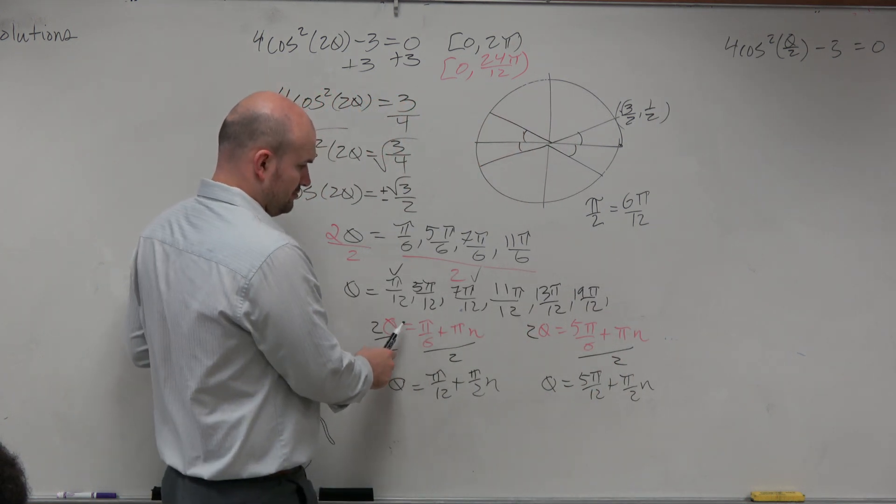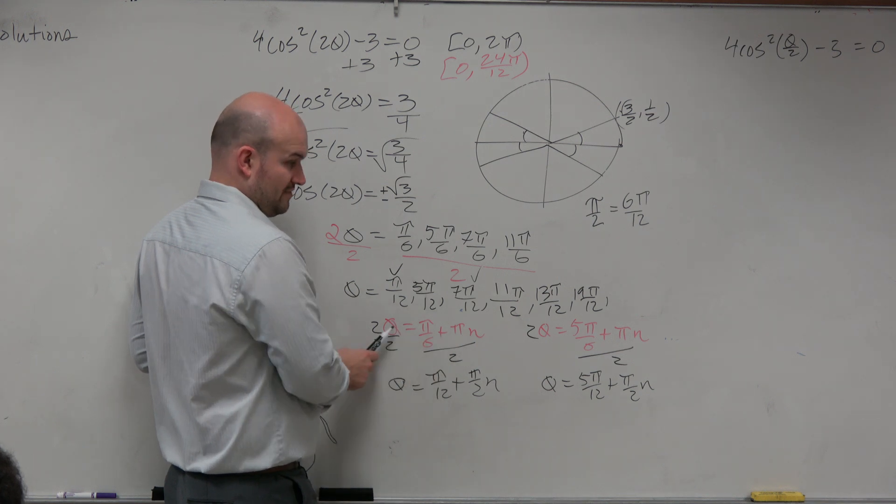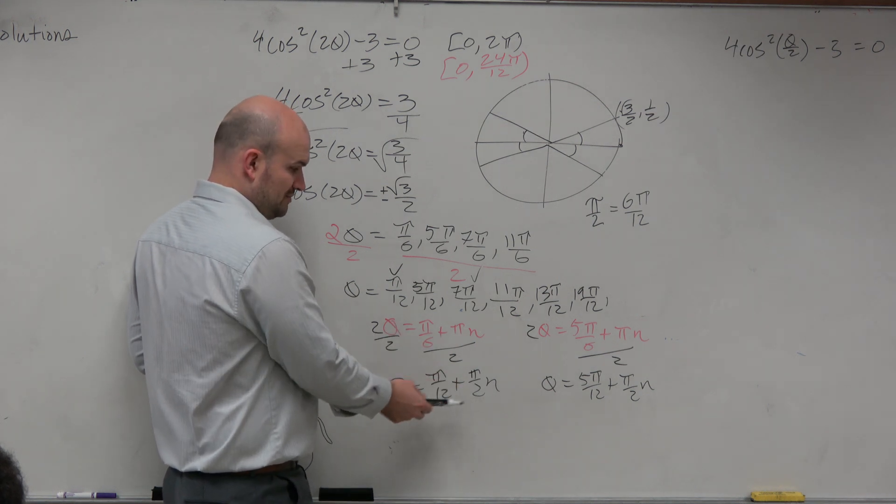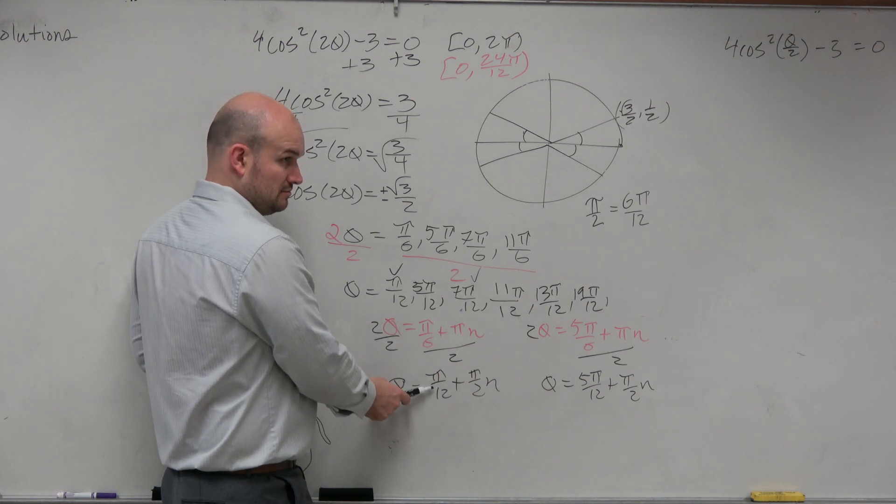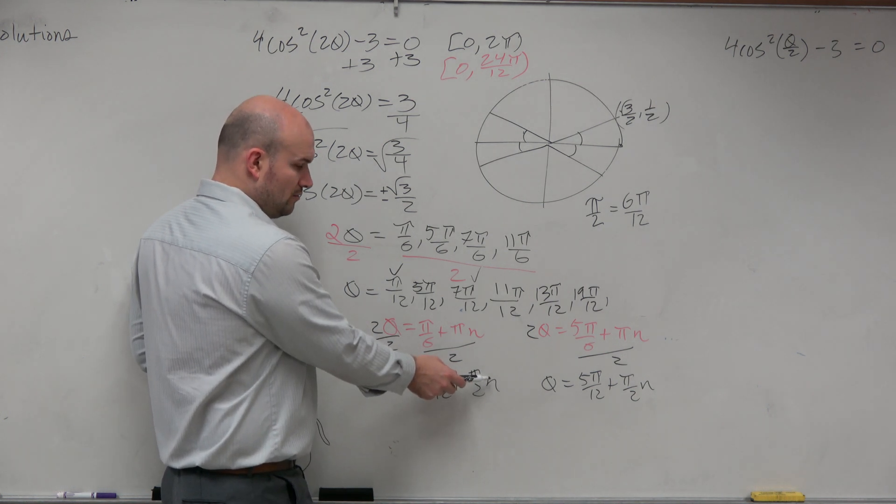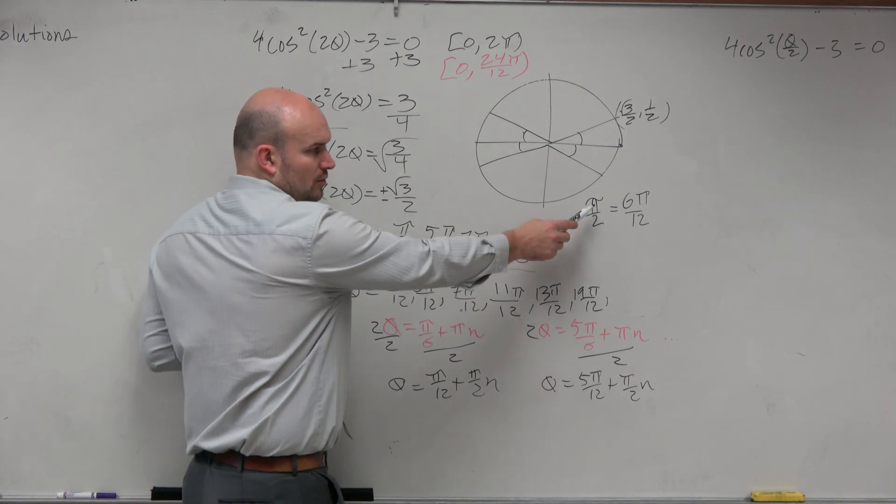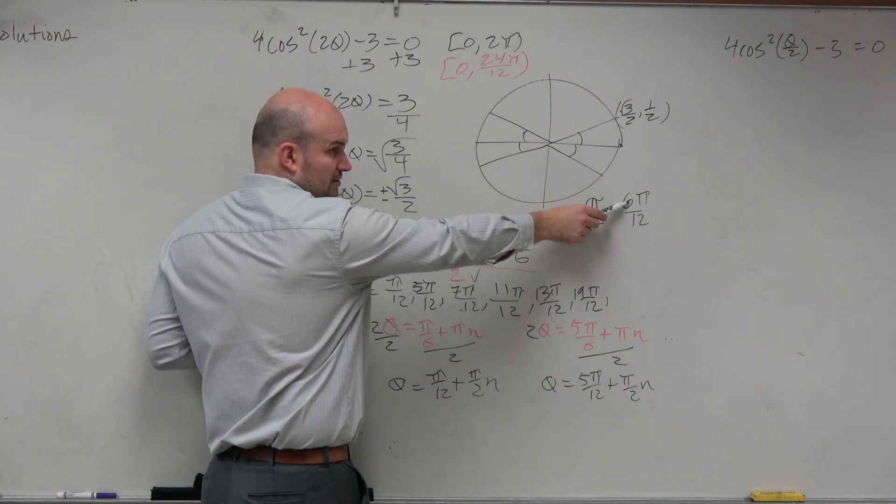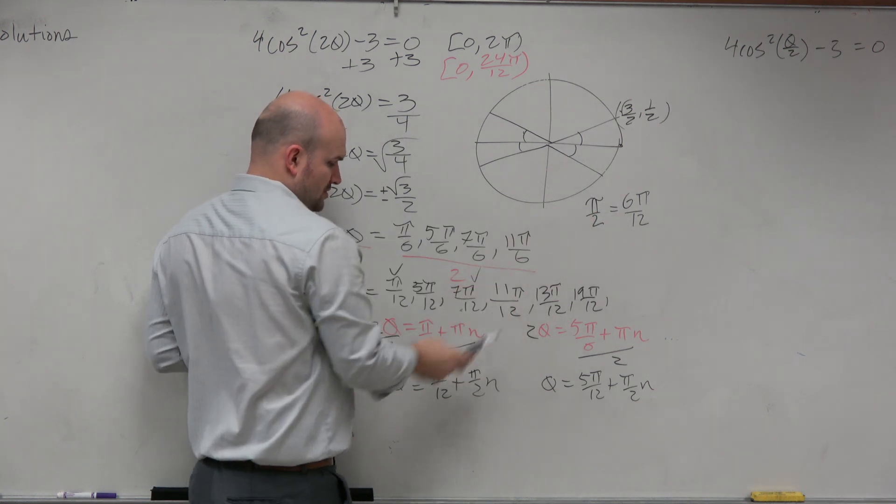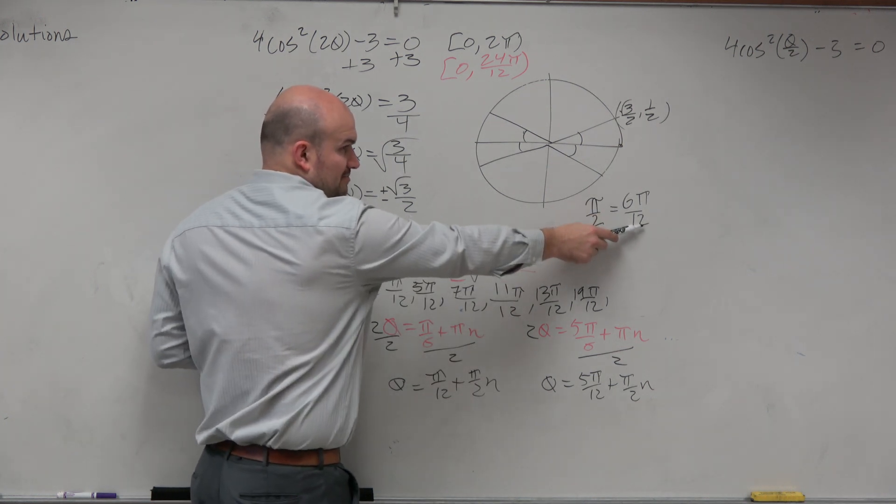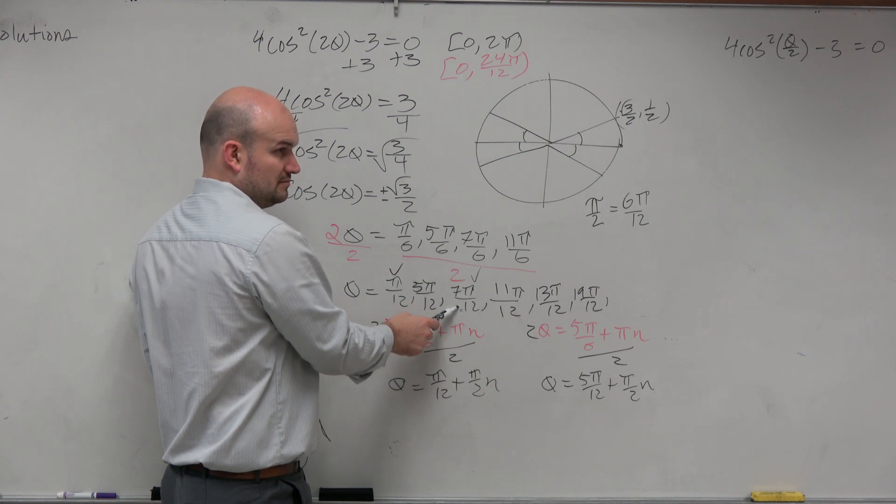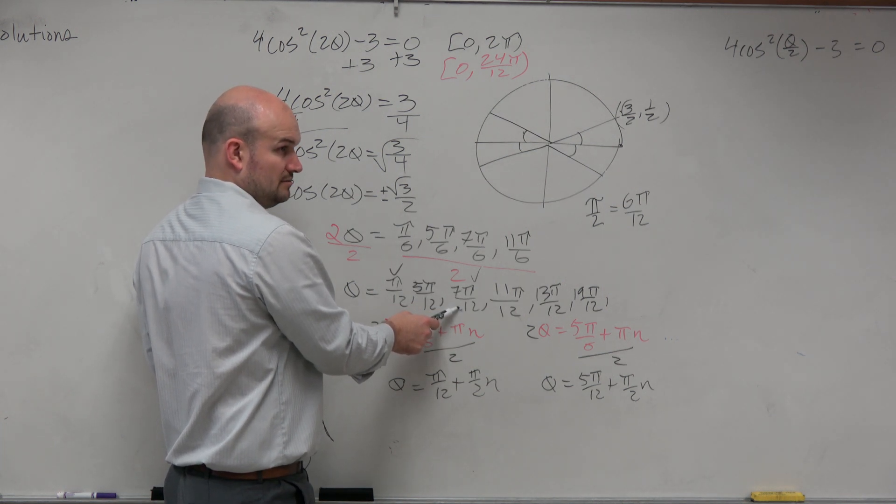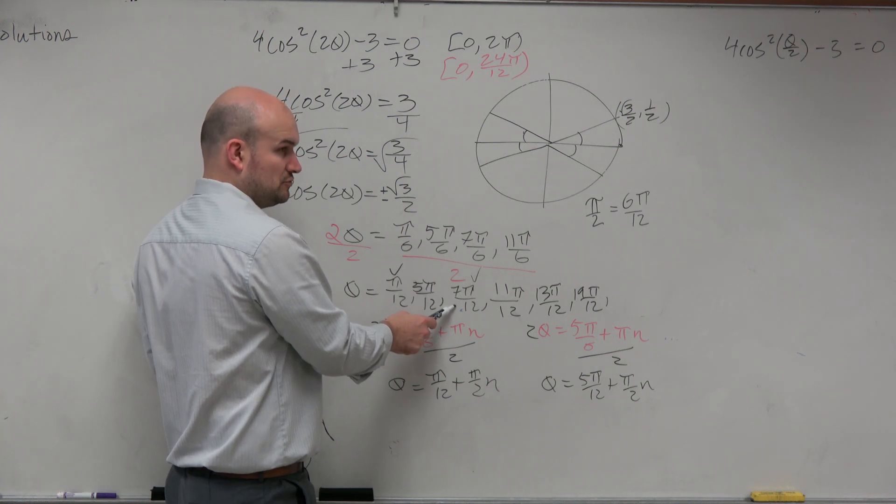So do you understand how I get where this came from? All I'm doing is: n is 0, you have pi over 12. n is 1, 1 times 1 half is 1 half. 1 half is the same thing as 6 pi over 12. Would you agree with that? So what's pi over 12 plus 6 pi over 12? 7 pi over 12. You just add the numerators.